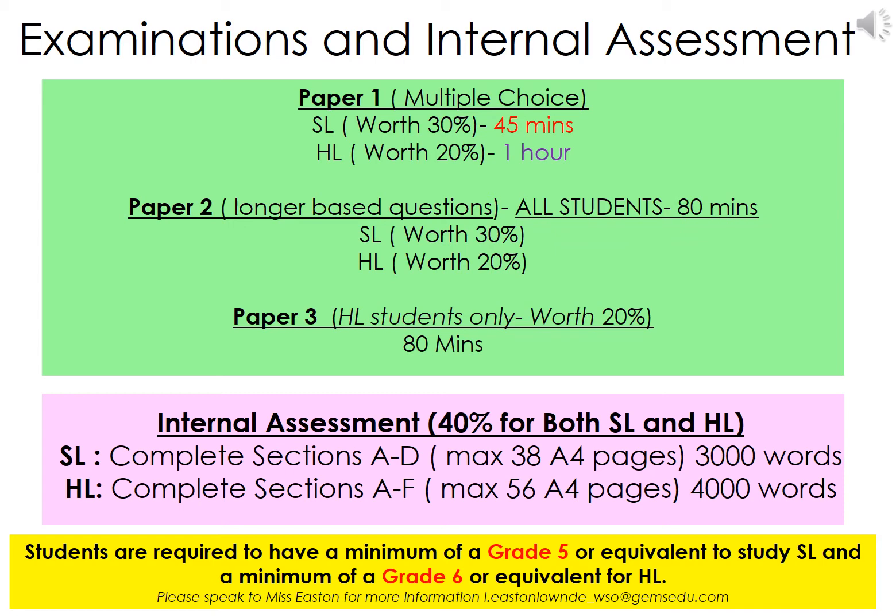Paper 3 is only sat by HL students, covering the 4 topics that HL students study, and is 1 hour and 35 minutes. All exams are taken at the end of year 13. As well as the examinations, you have to complete an internal assessment, or IA, which is worth 40% of your overall grade.